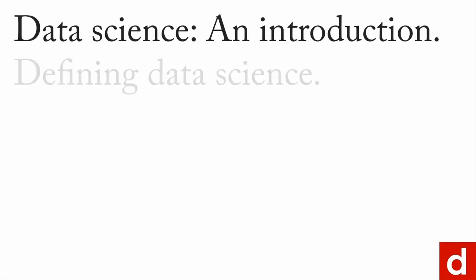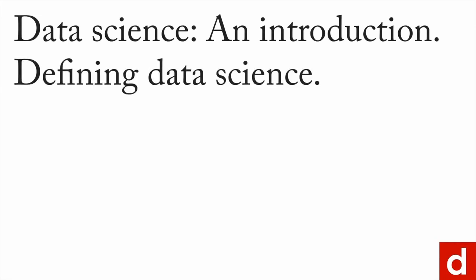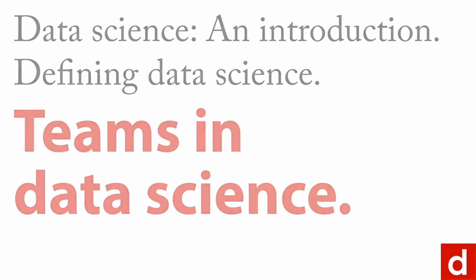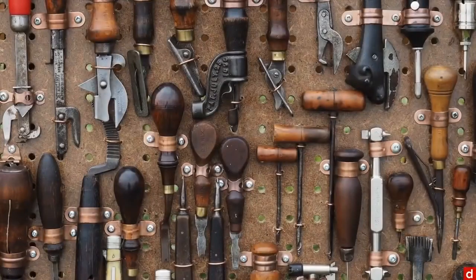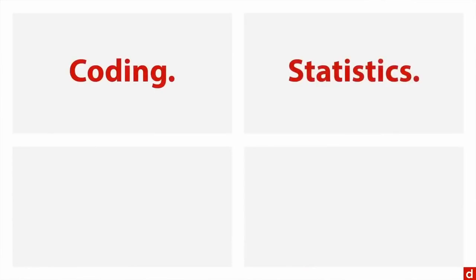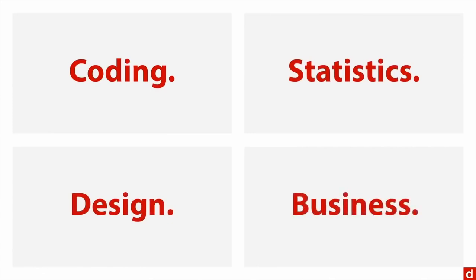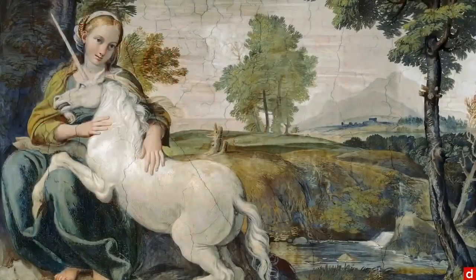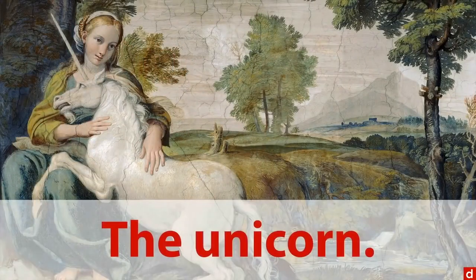The last thing to cover in defining data science is teams. Data science has many different tools and different people are going to be experts in each one. You have coding, statistics, design, business and management — all involved. The question is: who can do all of it at the level needed? That's where we get the 'unicorn.'